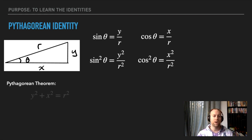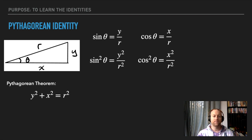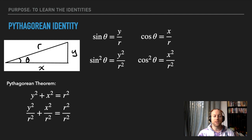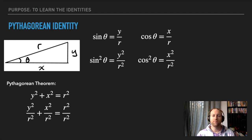This is just a proof of where these identities come from — you don't necessarily need to know the proof. You all know x² + y² = r², the Pythagorean theorem. Now we have y, x, and the radius. If I take this entire equation and divide every term by r squared, the y²/r² term is the same as sine squared theta, and x²/r² is the same as cosine squared theta, and r²/r² is just one.